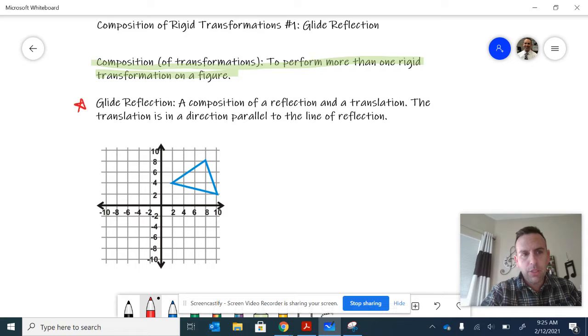The important thing to notice is that the translation—the movement either up, down, left, or right—needs to be in a direction parallel to the line of reflection.